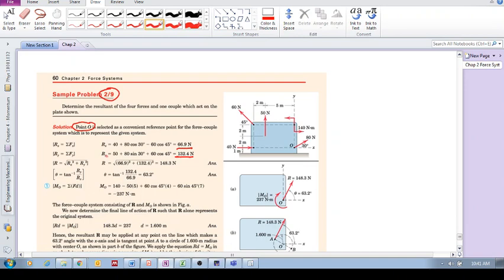We've now calculated Rx and Ry, and then we calculate the magnitude of R. So we've got now, at this point, at point O, we have an Rx of 66.9 and we have an Ry of 132.4, and there's our resultant. So the angle is arctan of that value, 132.4 divided by 66, and we get this angle there. So now the resultant force at point O is 148.3 at this specific angle. That is step one.